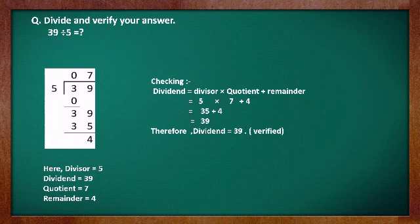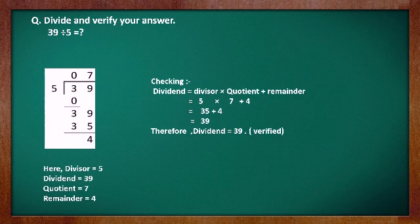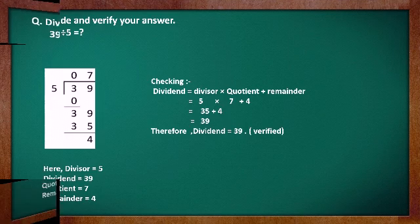The checking formula is: Dividend = Divisor × Quotient + Remainder. Putting in the numbers: 5 × 7 + 4 = 35 + 4 = 39. Our dividend is 39 — and yes, the dividend is 39. So our answer is verified. That means you have done it right.